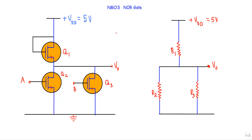Here is the circuit structure of the NMOS NOR gate. We use a total of 3 N-type MOSFETs: Q1, Q2, and Q3. The drain terminals of Q2 and Q3 are connected together, and we take the output from this common point. The transistor Q1 is known as the loading MOSFET, meaning it acts like a load resistor.